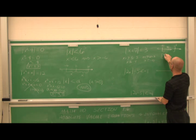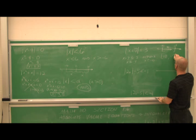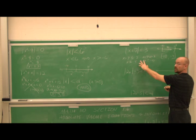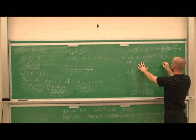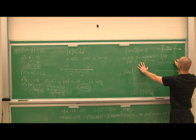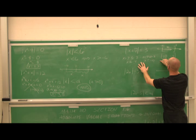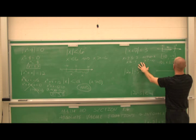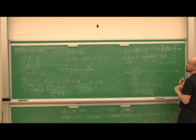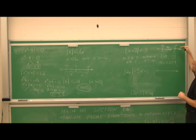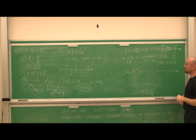Writing this in interval notation: negative 10 to negative 4. And statements can also be written as a compound inequality — negative 10 is less than or equal to x is less than or equal to negative 4. Notice we always write compound inequalities from least to greatest value. So there we have the solution in graphical notation, set notation, and interval notation.